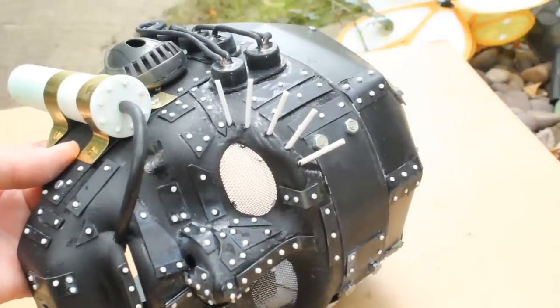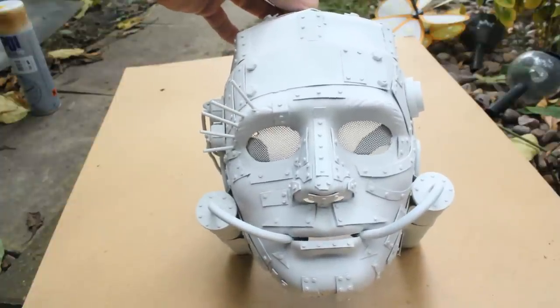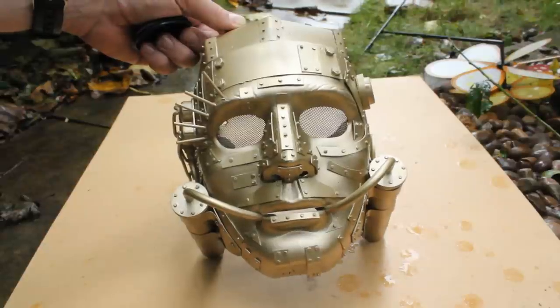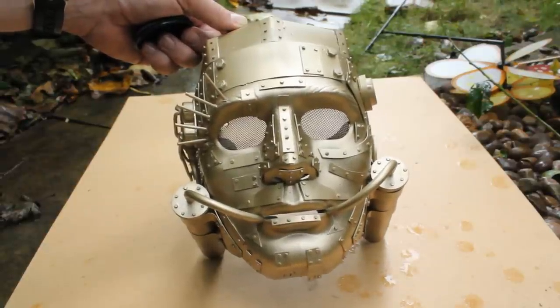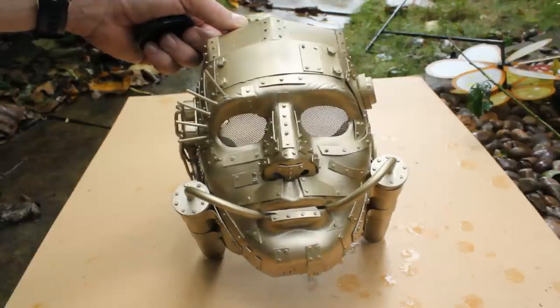I'm now going to spray paint the entire mask with a base layer. Here's the mask covered with a white primer undercoat. Here is the mask sprayed a brass color. I'm now going to put a brown wash over the top of this to highlight all of the raised pieces.